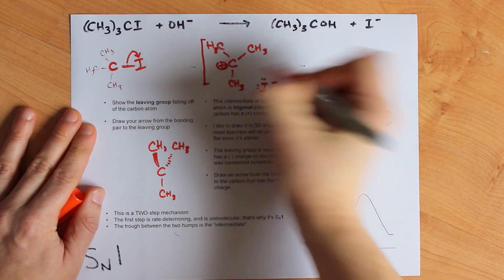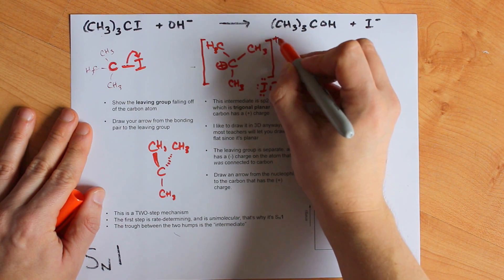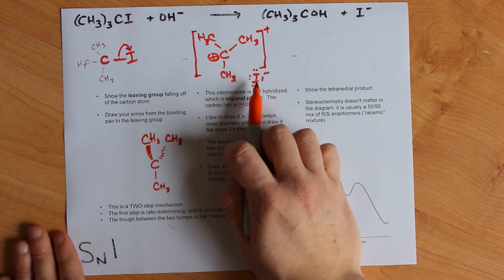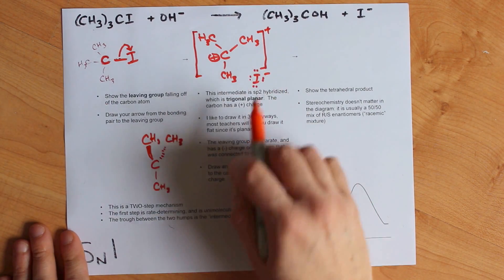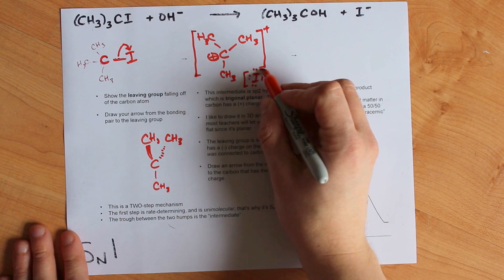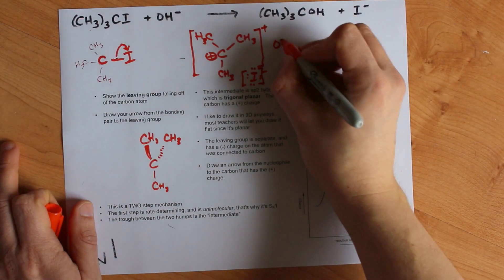Some teachers want you to put the carbocation in large square brackets with a plus charge. I know the IB used to require that. And the I minus leaving group, sometimes your teacher will require square brackets around that as well, because this is a Lewis structure and its charge is minus one.